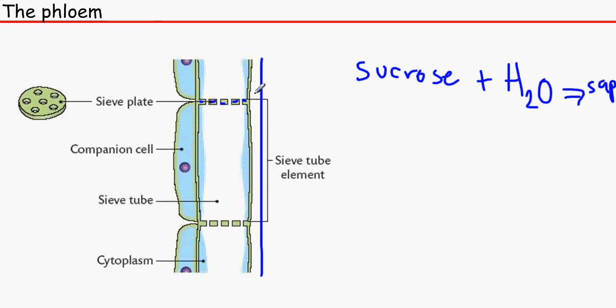Also, the sieve tube walls are usually very thin as well. So looking at the companion cells, that is a great contrast to the sieve cells because it's got a large nucleus and a dense cytoplasm, and it's got many mitochondria used for ATP for loading and unloading, which we're going to cover later. It also carries out metabolic processes.